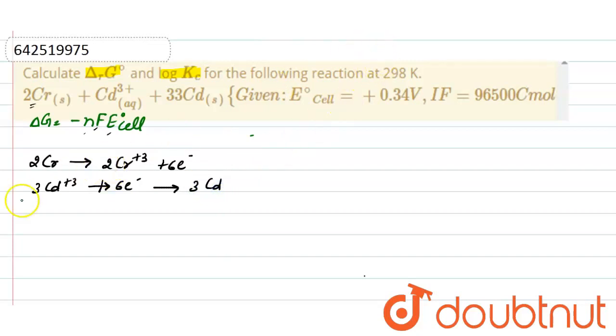Now put the values: delta G equals minus 6 times 96500 times 0.34. After solving, delta G equals minus 19680 joules per mole.